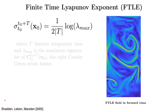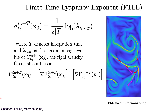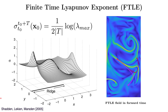One of the most popular and convenient ways to extract Lagrangian coherent structures from the fluid flow is to calculate the finite time Lyapunov exponent field. This is a scalar field that measures the maximum stretching between two points in the fluid flow. Sigma is represented where T0 is the initial time, capital T denotes the integration time, and lambda max is the maximum eigenvalue of C, the right Cauchy-Green strain tensor. We extract ridges of the FTLE field, and this provides the LCS.